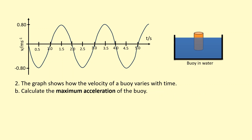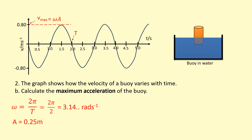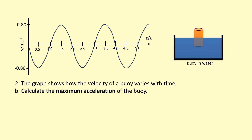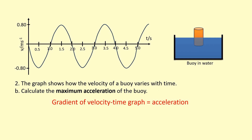For part b, calculate maximum acceleration. We know v_max, time period, ω, and amplitude from before. Maximum acceleration = ω²A = 3.14² × 0.25 = 2.5 m/s². Alternatively, the gradient of a velocity–time graph equals acceleration, so the maximum acceleration is found by drawing a tangent at the steepest point on the graph and calculating its gradient.